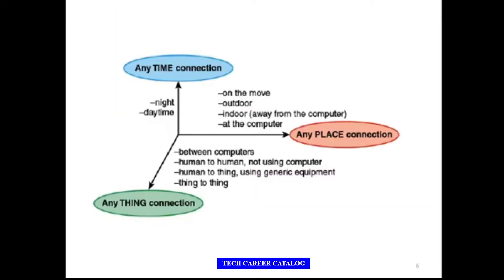Basically, there are various dimensions we have got. As you can see in this diagram, this is the scope of the Internet of Things — anytime, any place, anything we can connect. It sets a global infrastructure for the information society, enabling advanced services by interconnecting things based on existing and evolving interoperable information and communication technologies. It can be between computers, human to human, human to thing, or thing to thing — night or daytime, on the move.